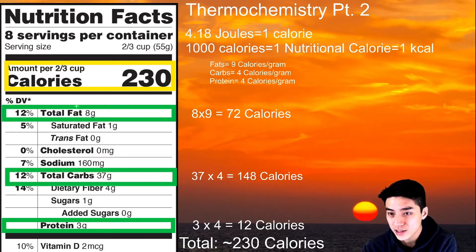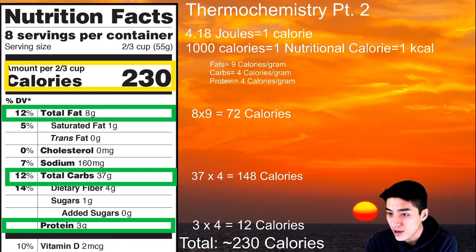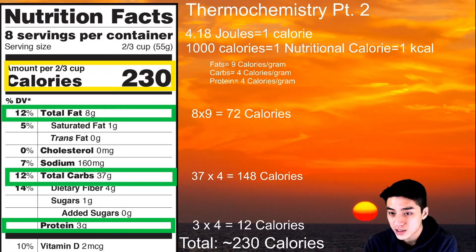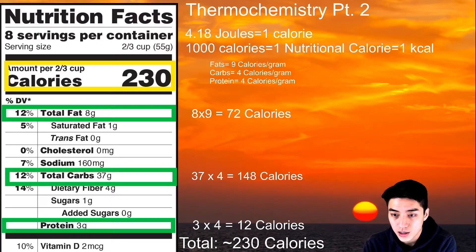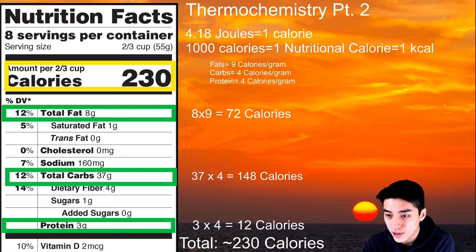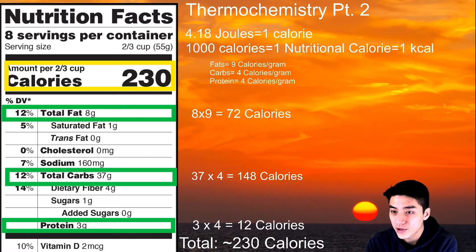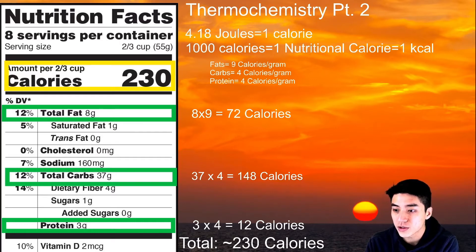This is how you calculate the number of calories in a food sample. You take your fats — there are 8 grams in that green box — and multiply by 9 because there are 9 calories per gram, giving 72. Next, carbs: 37 grams multiplied by 4 gives 148. And proteins: 3 grams multiplied by 4 gives 12. Adding those three sources of energy, I get roughly 230 calories.